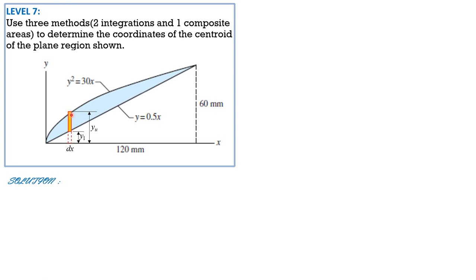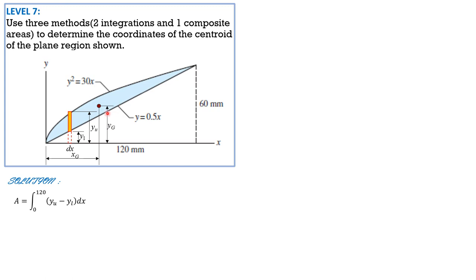The centroid of the shaded region has location from the Y-axis called x_G. Area equals the integral from 0 to 120 of (upper Y minus lower Y) DX. The upper Y is the Y of the parabola, which is √(30x), and the lower Y is the Y of the line, which is 0.5x. So area equals the integral from 0 to 120 of (√(30x) minus 0.5x) DX. Although this is just a power formula, since we are allowed to use the calculator — and by the way, x sub c of the strip is just x.